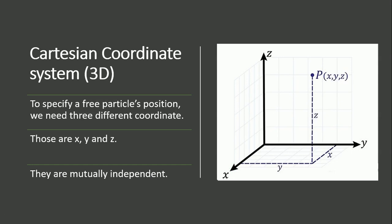We are all familiar with the Cartesian coordinate system in three dimensions. If you want to specify a particle's position, we need three different coordinates: X, Y, and Z, and they are mutually independent. To specify the position of particle P we need X, Y, and Z. If we use another coordinate system — for example, spherical polar or cylindrical — we still need three different coordinates.